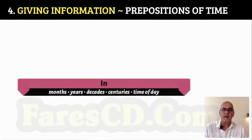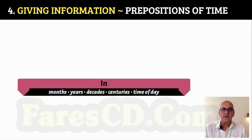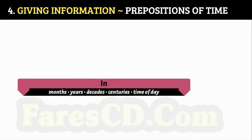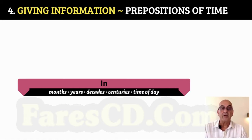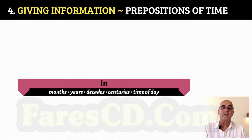Prepositions of Time. We use 'in' when we talk about months, years, decades, centuries, and time of day. A decade equals every 10 years. A century is every 100 years. For example: 19th century, 20th century, 21st century.